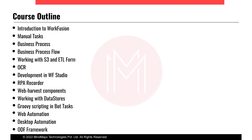Throughout this course, we are going to cover what WorkFusion is, its various architecture and components. We'll also cover manual tasks — workspace queue management, how we can customize manual tasks. We'll cover business processes, board configuration, how we deploy to the Control Tower, what the Control Tower is, and how to prepare the business process flow diagram in the Control Tower.